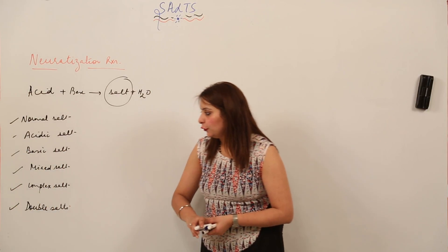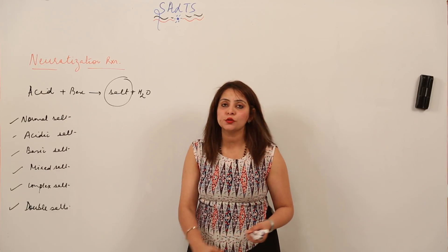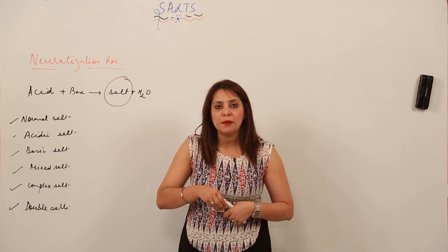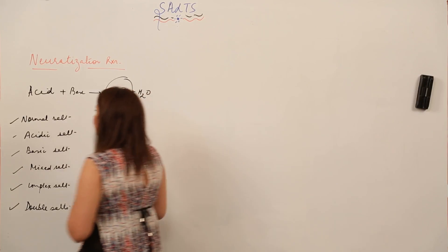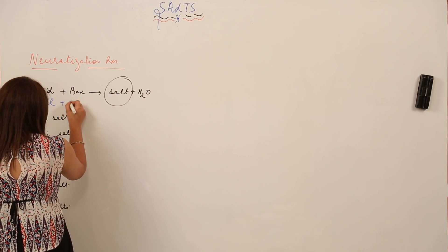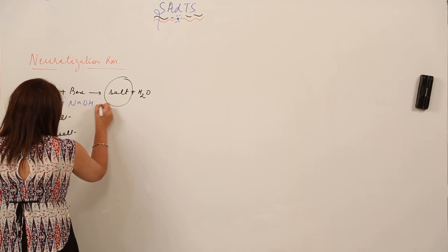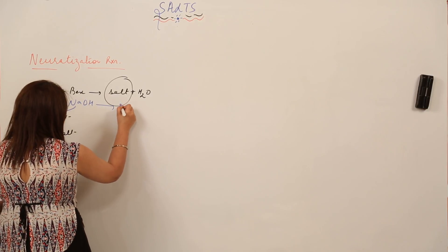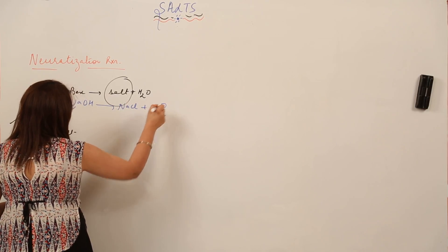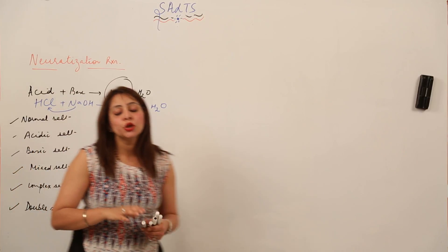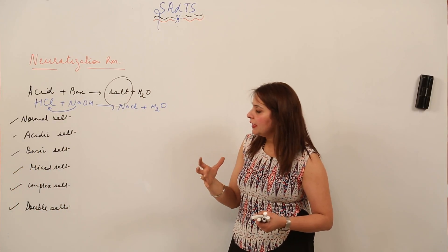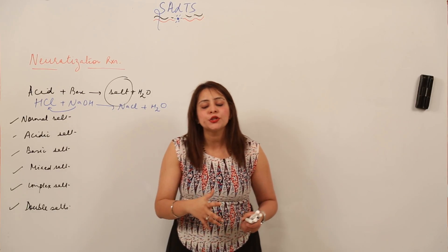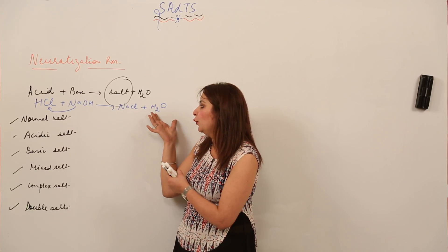Before we discuss these types of salt, let's look at what happens in the neutralization reaction. For example, suppose I have acid HCl and a base NaOH. What happens is Na replaces H and combines to form NaCl, and H and OH just form H2O. So there is a replacement of H from the acid and OH from the base, which leads to the formation of water and salt.